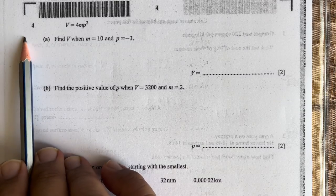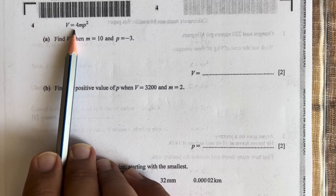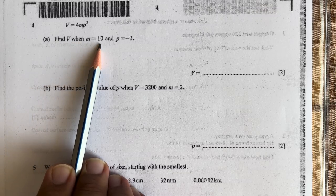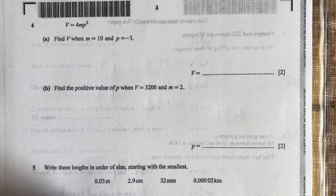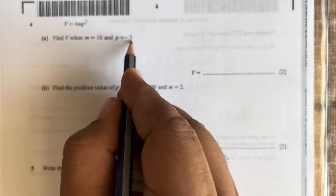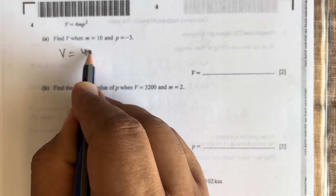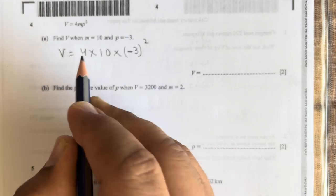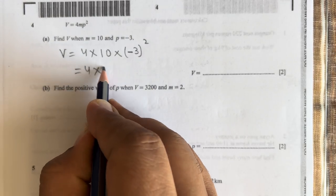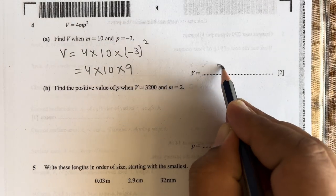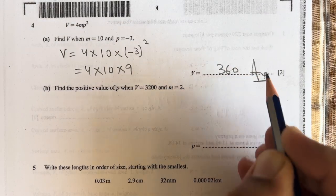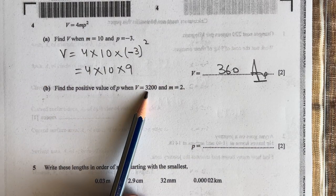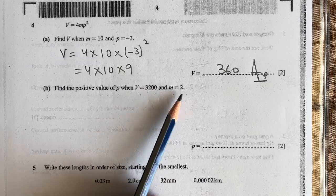Question number 4: V = 4mp². Find V when m = 10 and p = -3. We will put these values in this equation. V = 4 × 10 × (-3)². This will be 4 × 10 × 9, which equals 360. 360 will be the correct answer.